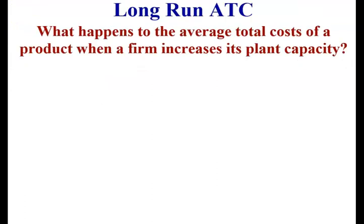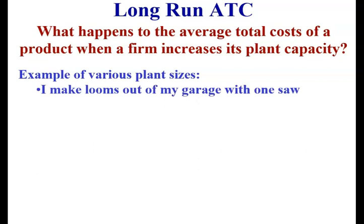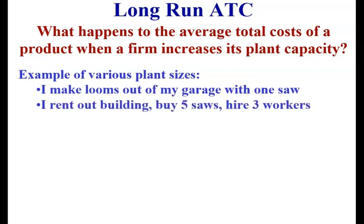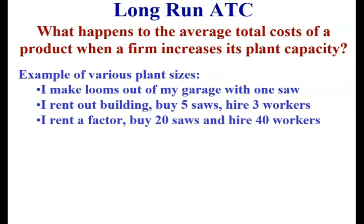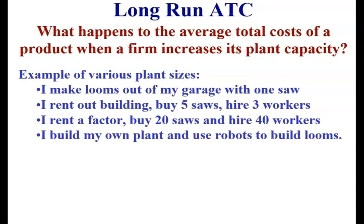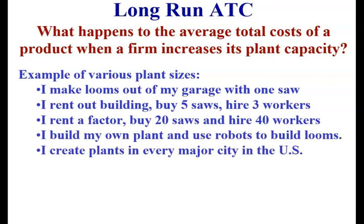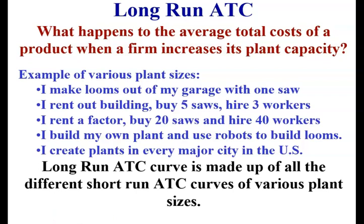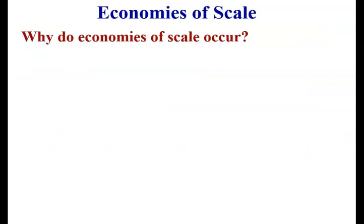What happens to the average total cost of a product when a firm increases its plant capacity? Here are examples of various plant sizes: making looms out of a garage with one saw; renting a building with five saws and three workers; renting a factory with 20 saws and 40 workers; building your own plant using robots; and creating plants in every major city in the U.S. A long run average total cost curve is made up of all the different short run average total cost curves of various plant sizes.